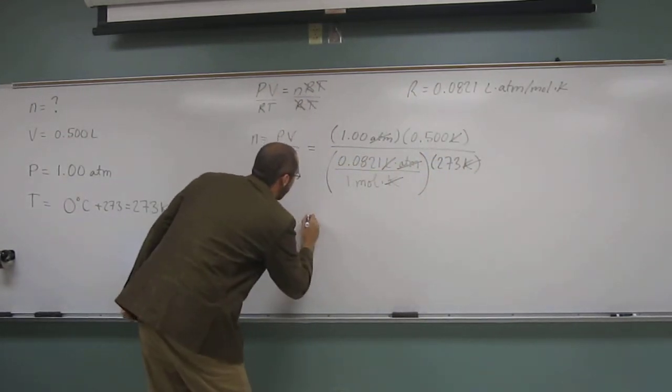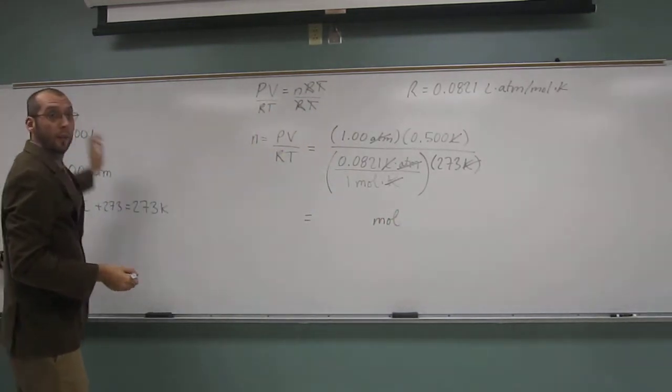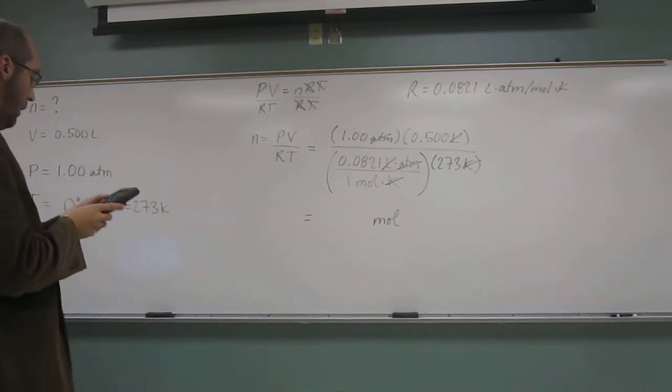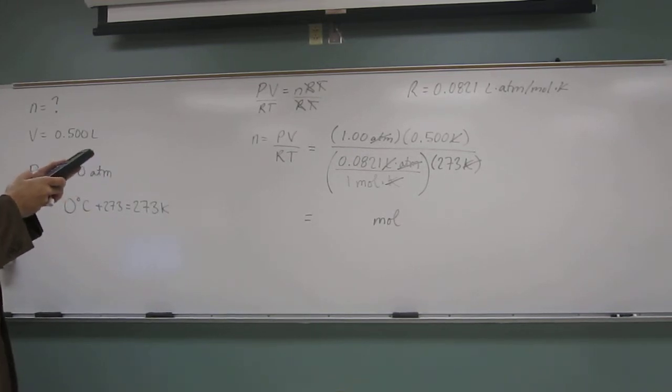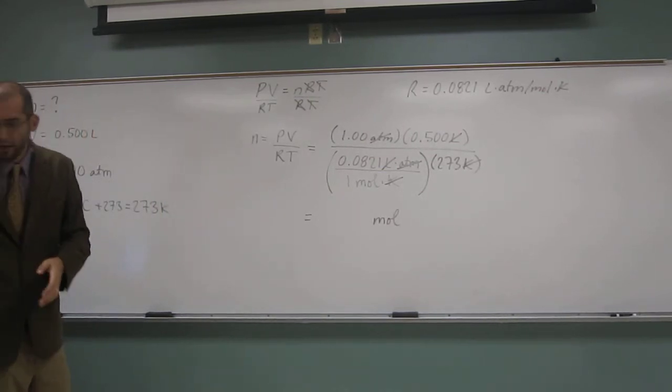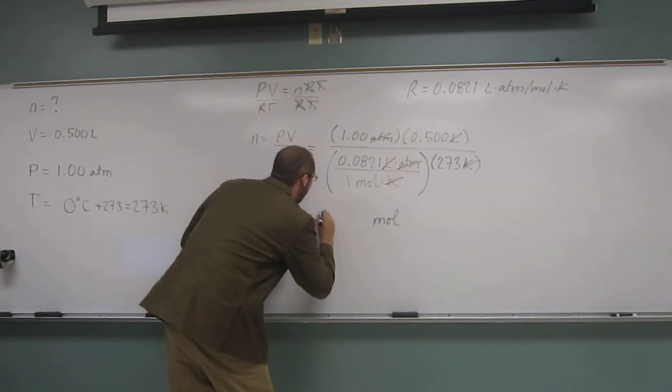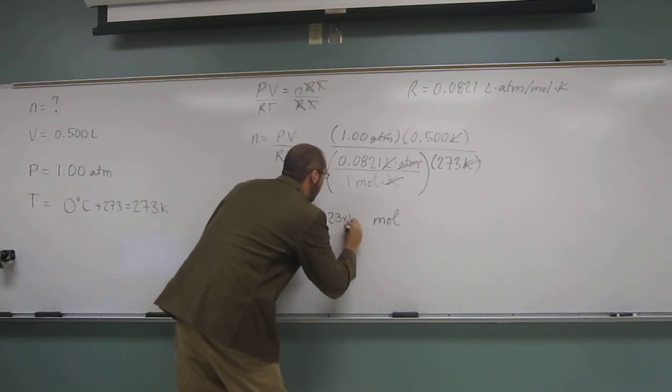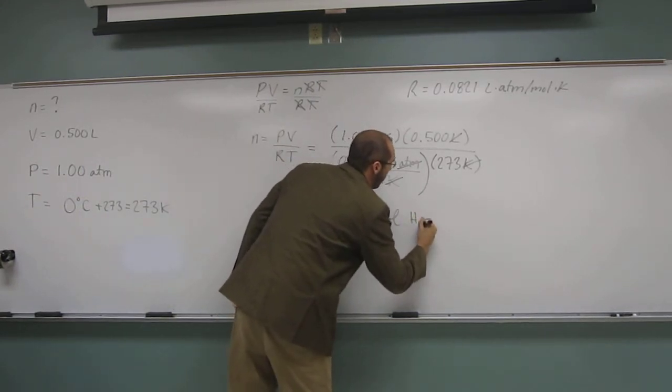Okay. So, let's just write out our units real quick. Moles, and that's what we're looking for, right? So, we're cool. So, 0.5 times 1 divided by 0.0821, and then divide that by 273. And the number of moles that I get, I'll put this into scientific notation. Three significant figures is going to be 2.23 times 10 to the negative 2 moles of H2.